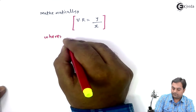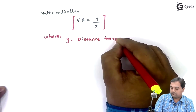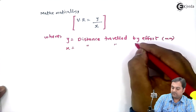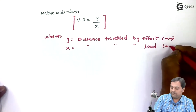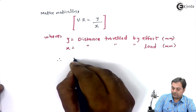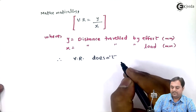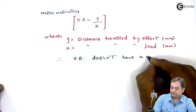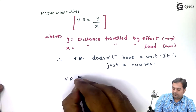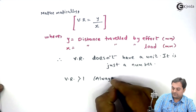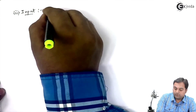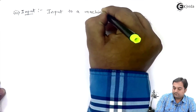Here Y is the distance traveled by effort, say in mm, and X is the distance traveled by load, also in mm. Since both are distances, the units cancel out, so velocity ratio does not have a unit — just like mechanical advantage, it is just a number. Velocity ratio will always be greater than one.